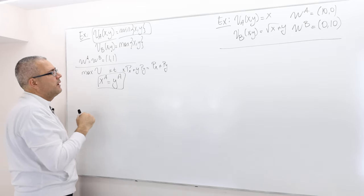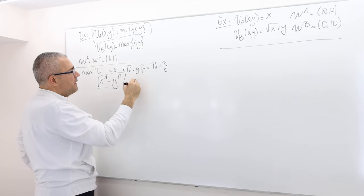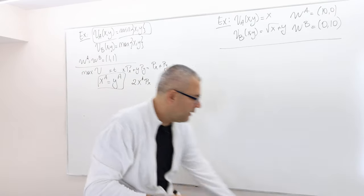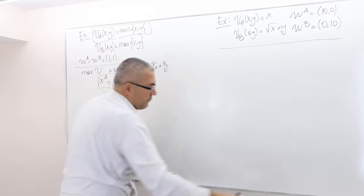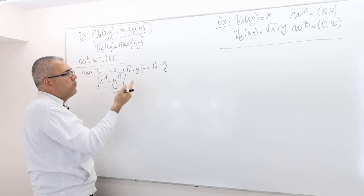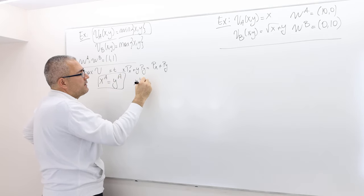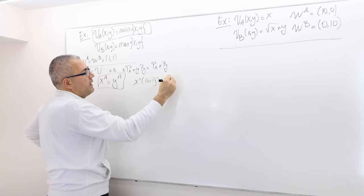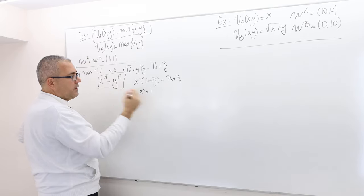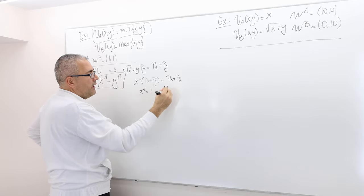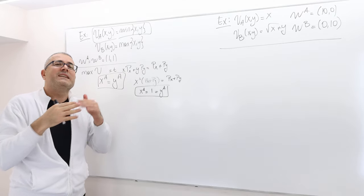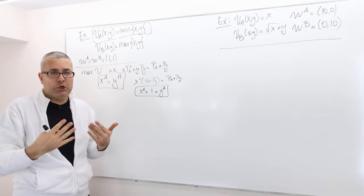Plugging XA = YA into agent A's budget constraint: XA·PX + XA·PY = PX + PY, so XA·(PX + PY) = PX + PY, giving XA = 1. And since YA = XA, it is also equal to 1. So consumer A does not want to trade any good.